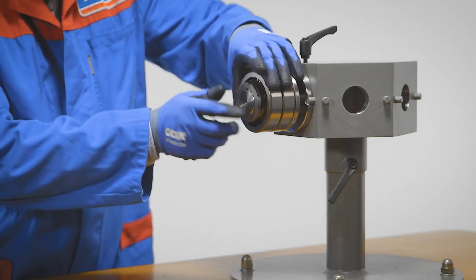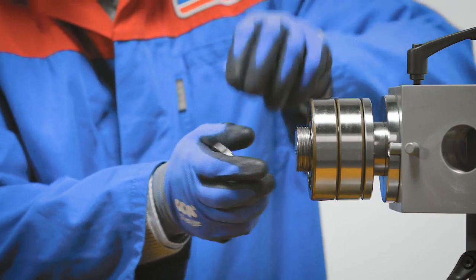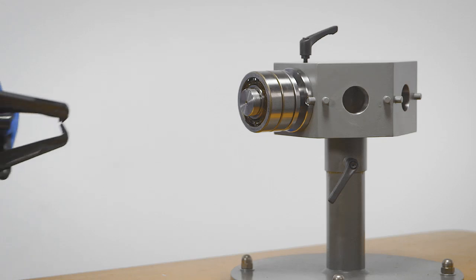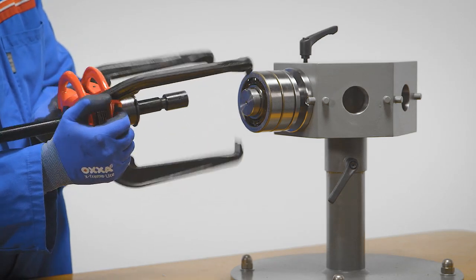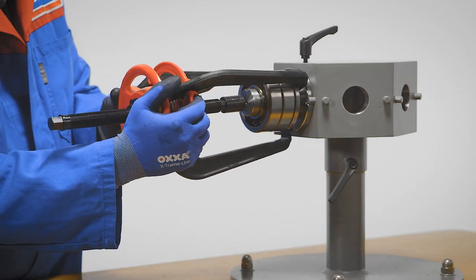To dismount angular contact ball bearings, first remove the lock nut. The most common method to remove the bearings from the shaft is to use a mechanical puller.